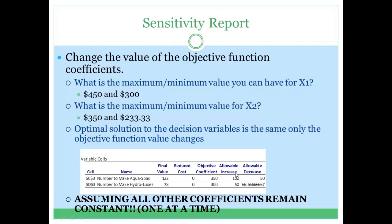The way to find the new objective function value is by taking the new objective coefficient and plugging it into the objective function. Instead of 350 times x1 plus 300 times x2, now we will have 351 times x1 plus 300 times x2.